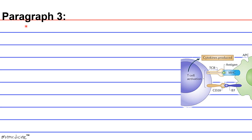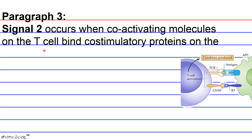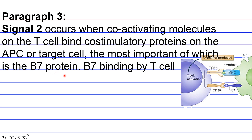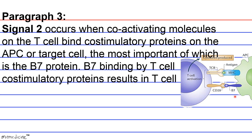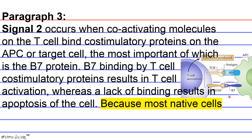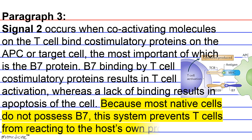Paragraph 3. Signal 2 occurs when co-activating molecules on the T-cell bind co-stimulatory proteins on the APC or target cell, the most important of which is B7. B7 binding by T-cell co-stimulatory proteins results in T-cell activation, whereas a lack of binding results in apoptosis of the cell. Because most native cells do not possess B7, this system prevents T-cells from reacting to the host's own proteins.